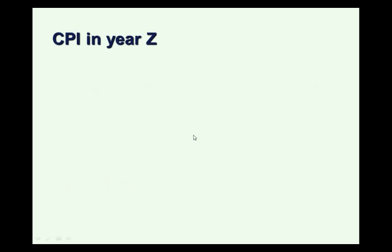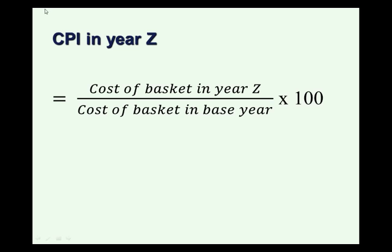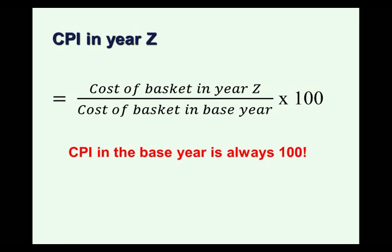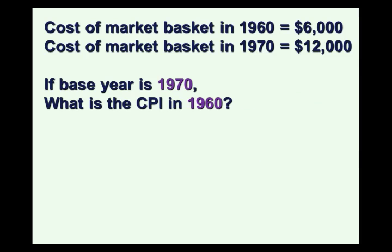Biases aside, how are we measuring the Consumer Price Index? In any year Z, the Consumer Price Index is the cost of the market basket in year Z relative to the cost of the market basket in a base year — so the index is telling us a relative comparison. The CPI in the base year is always going to be 100, because the numerator and denominator are the same, giving us 1, times 100, equals 100. If the CPI goes above 100, prices are higher than in the base year; if below 100, prices are lower.